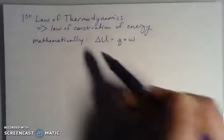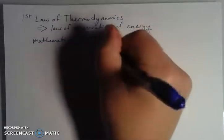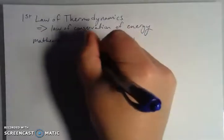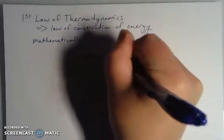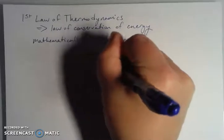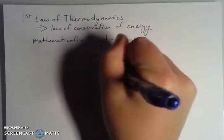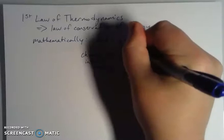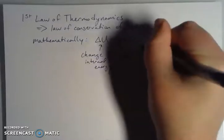And mathematically, when we're trying to talk about the first law of thermodynamics, we say that that change in internal energy, so that's my U here. So this is delta U, which indicates a change. That's equal to the heat, that's Q, plus the work.